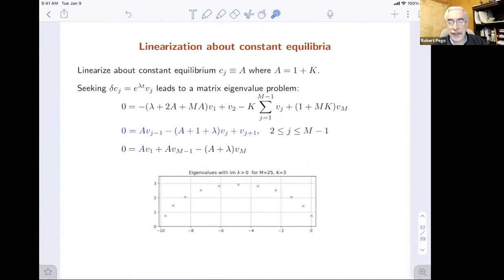We linearize around these constant equilibria, you get a big matrix eigenvalue problem. It looks kind of like a mess, but for rows two through m minus one on the matrix, there's this tridiagonal structure. That allows us to solve this differential difference equation and reduce the equations to two equations involving V1 and Vm. When you put it on the computer and just compute the eigenvalues, you get this interesting structure of eigenvalues on an ellipse. But there's one that's just peeking over there into the right half plane with positive real part. So the constant equilibrium destabilizes.